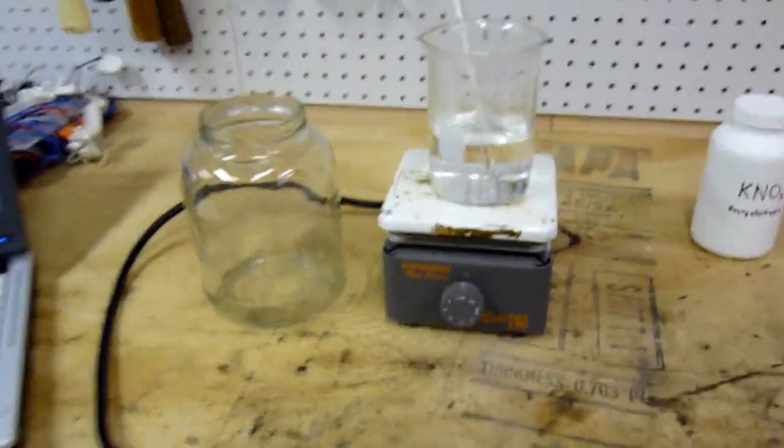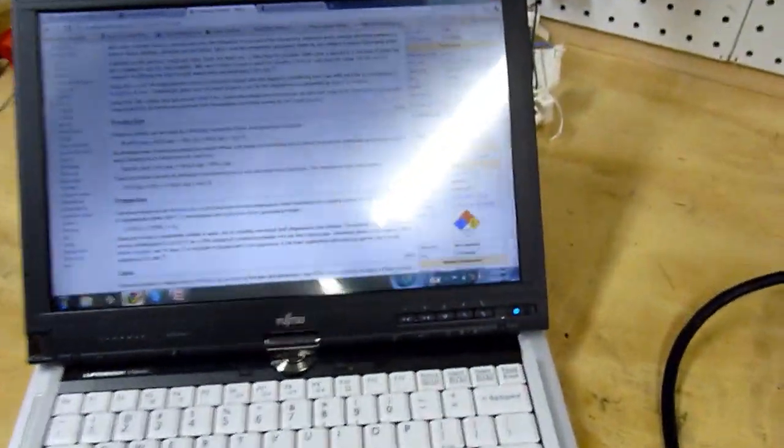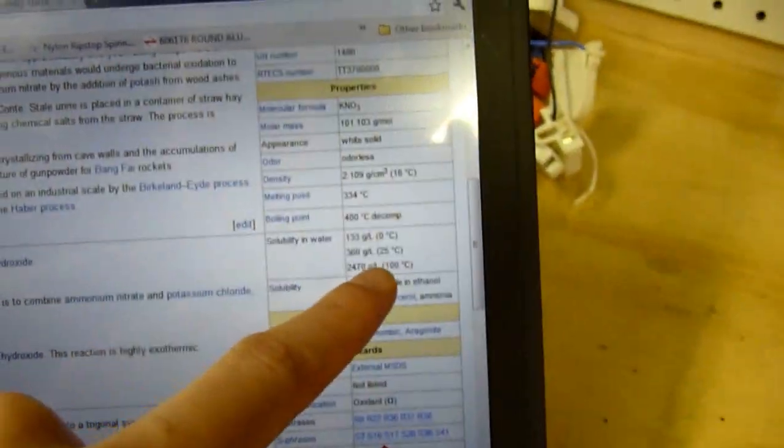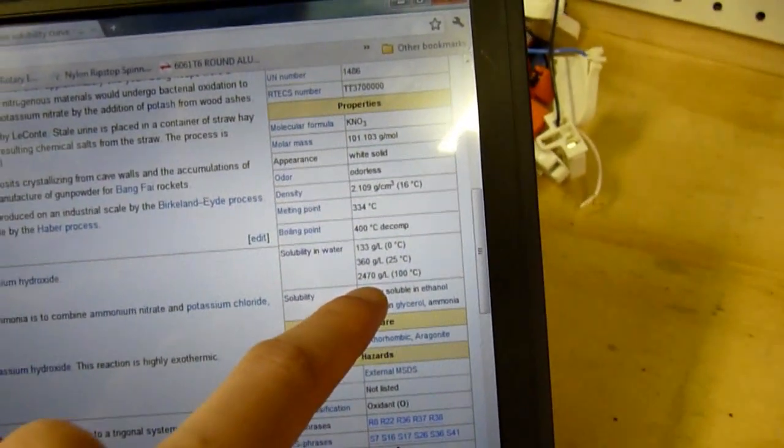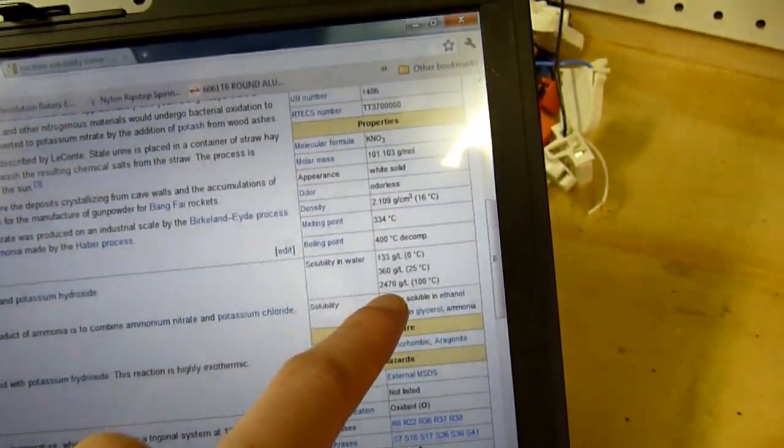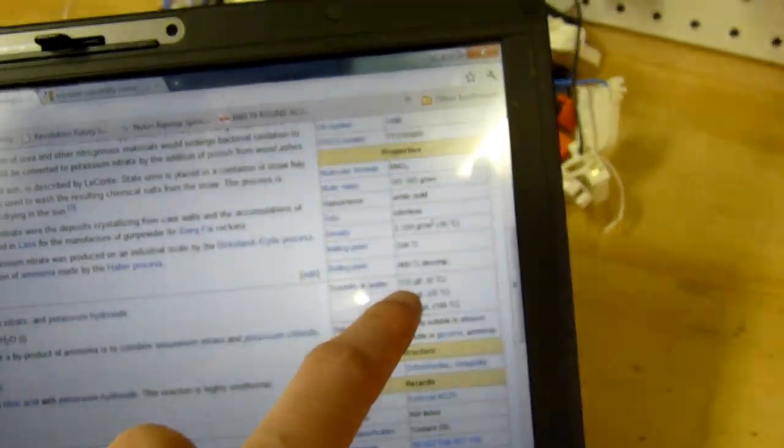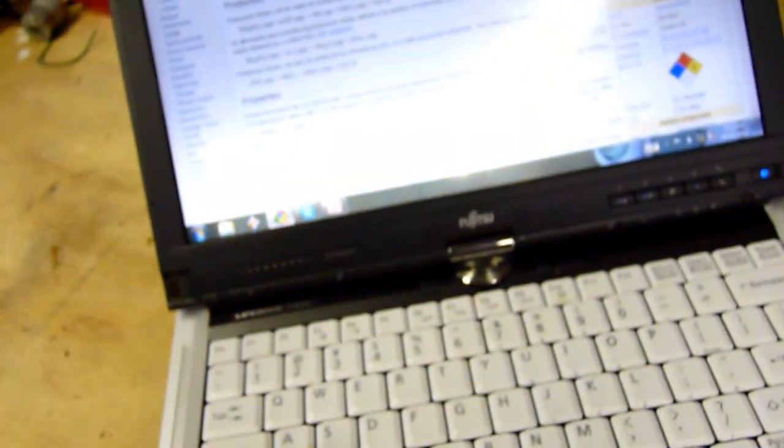Now over here on my laptop I have looked up some solubility data for potassium nitrate. If you look, at 100 degrees Celsius, one liter of solution can contain 2.4 kilograms of potassium nitrate, but at 0 Celsius, it can only contain 133 grams. Therefore, it has a very distinct solubility curve.